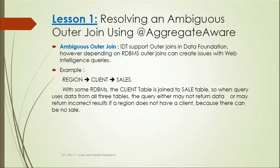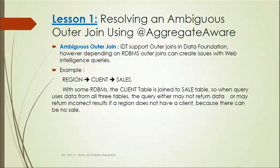We can resolve an ambiguous outer join using aggregate awareness. Aggregate awareness is a function we can use. An ambiguous outer join — IDT supports outer joins in the data foundation, however depending on the RDBMS, outer joins can create issues with Web Intelligence queries.